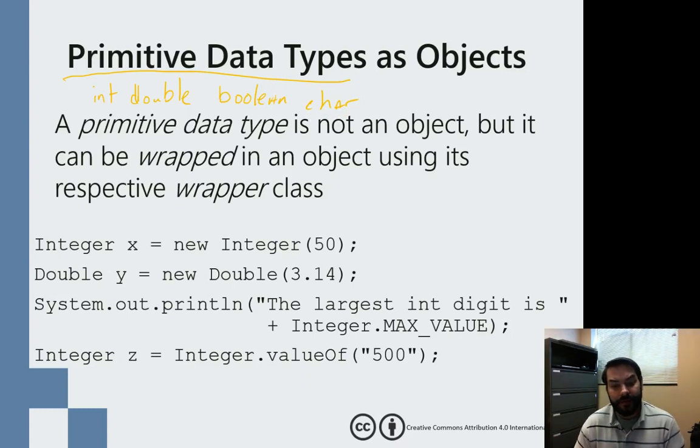But one of the things that we talk about is how everything in Java eventually becomes an object. Well, we can do the same thing with our primitive data types.